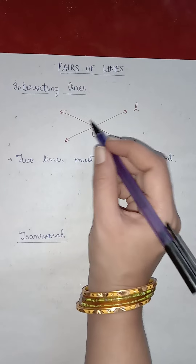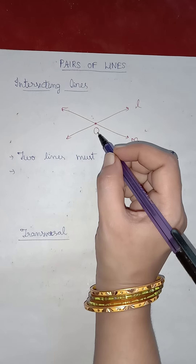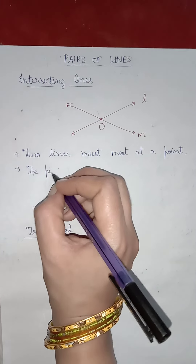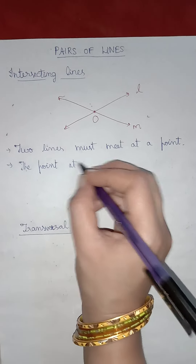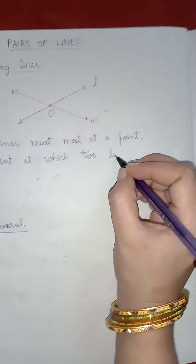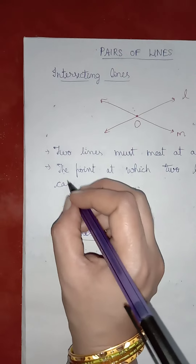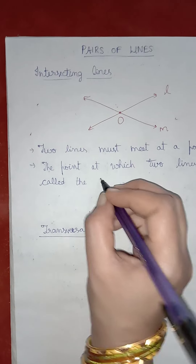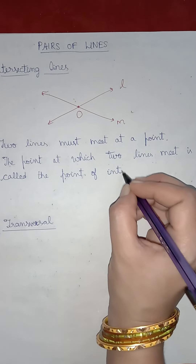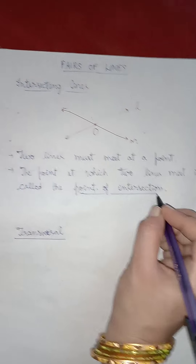The point at which the two lines meet is called the point of intersection. In this case, O is the point of intersection. So the point at which two lines meet is called the point of intersection.